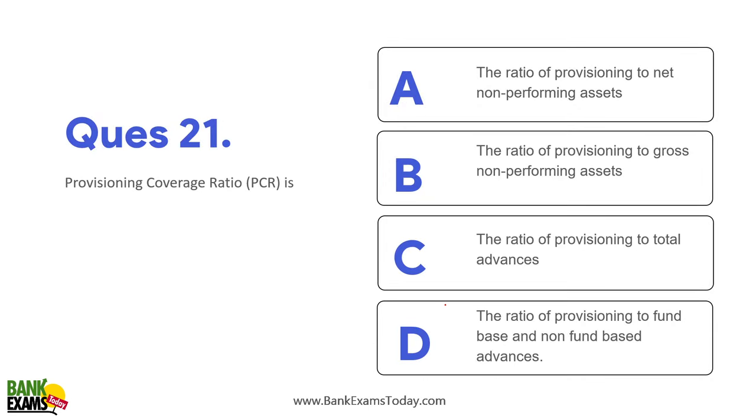The Provisioning Coverage Ratio (PCR) is the ratio of provisioning to gross NPAs.